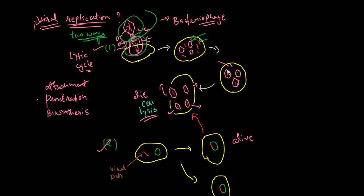The bacteriophage DNA is transcribed into mRNA, which directs the synthesis of viral enzymes and capsid proteins. Several of these viral enzymes catalyze reactions that make copies of bacteriophage DNA. The bacteriophage DNA then directs the synthesis of viral components by the host cell.